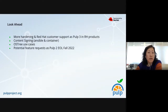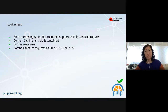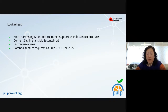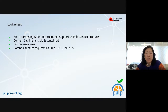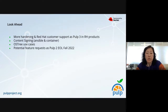The last slide: I anticipate we'll have a lot more hardening when PULP 3 goes out the door with some Red Hat products. I expect we'll be spending a lot of time on customer support, and on the positive side we'll get a lot more feedback from production sites, continuing to make PULP ready for those environments. Content signing for both Ansible content and containers is in planning right now — that's a big feature, kind of an epic we expect to be working on in the next few months. And I expect OS tree will continue to grow as we understand more use cases in that ecosystem.